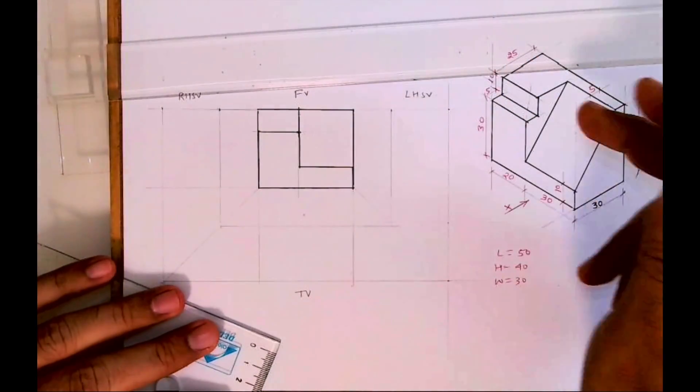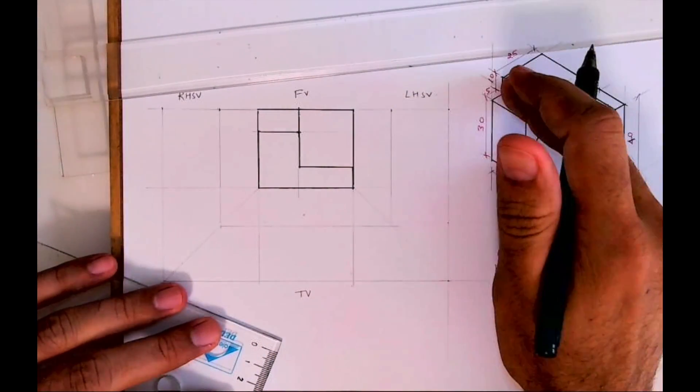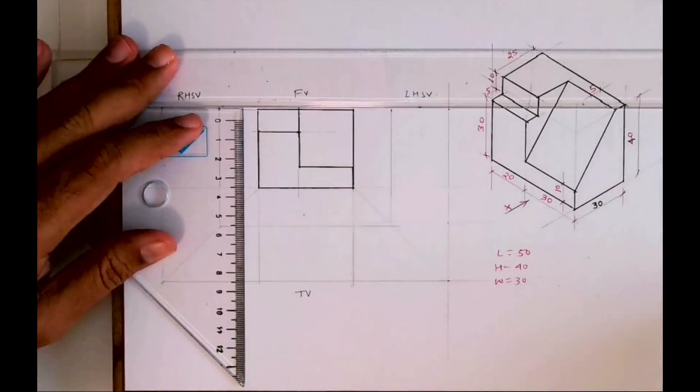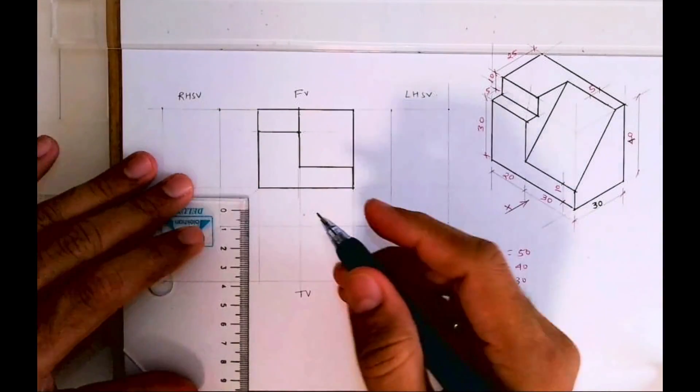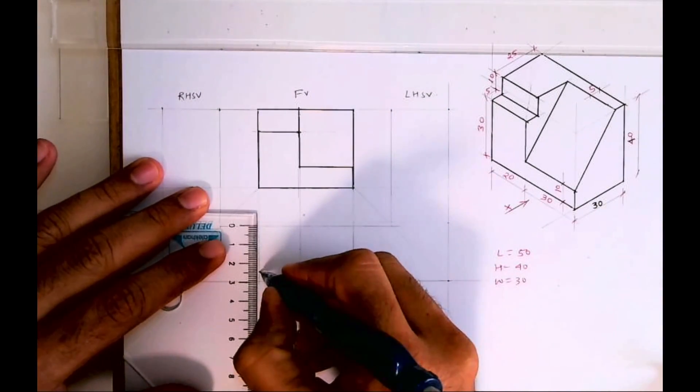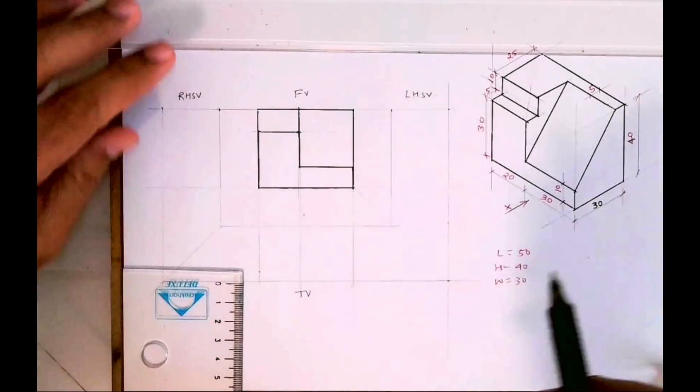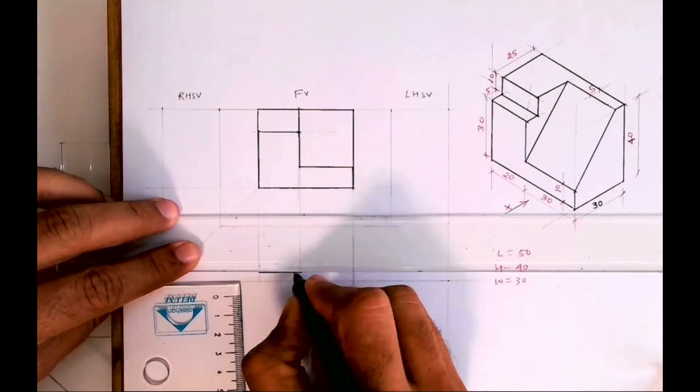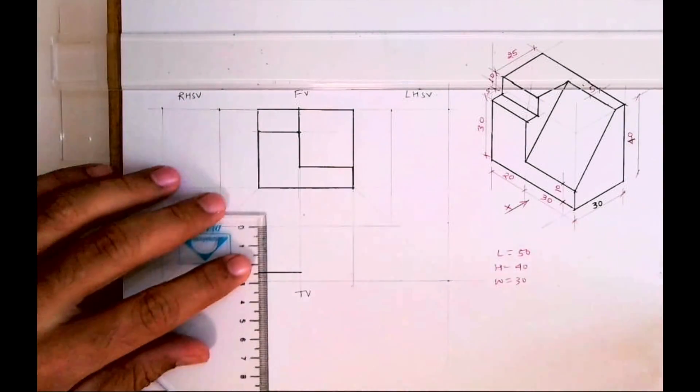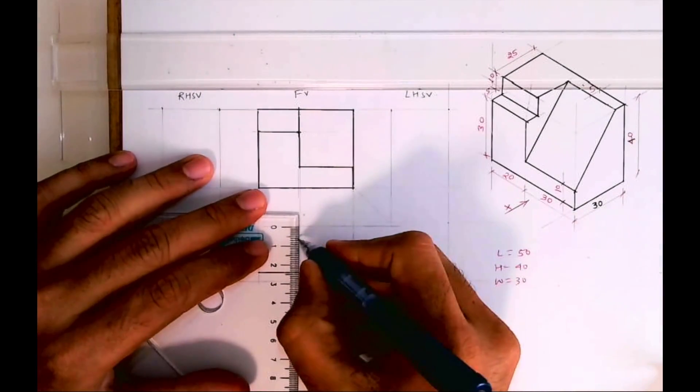Which is again rectangle, so we are done with front view. Now in top view again we'll see L, so we'll project. Now how much is this? 25. We'll draw horizontal line. Then this is 5 mm.